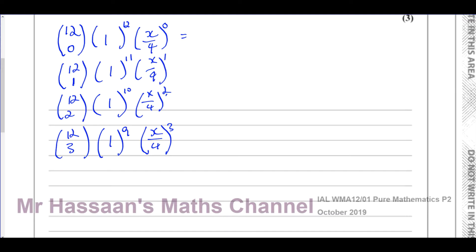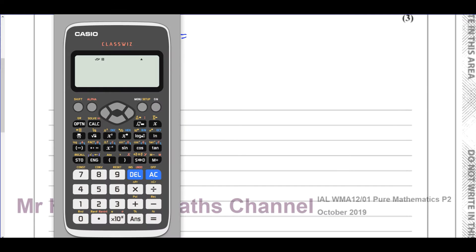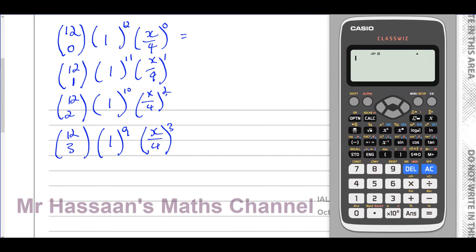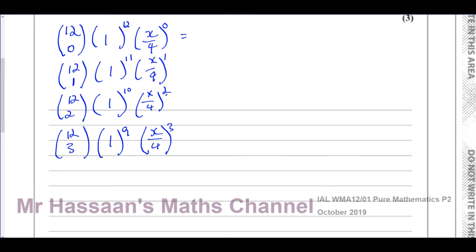The first term is 12C0. Using the NCR button on the calculator — press 12, then shift, then the division sign to get NCR — 12C0 gives us 1. Anything to the power of 0 is 1, and 1 to any power is 1, so the first term in our expansion is 1.